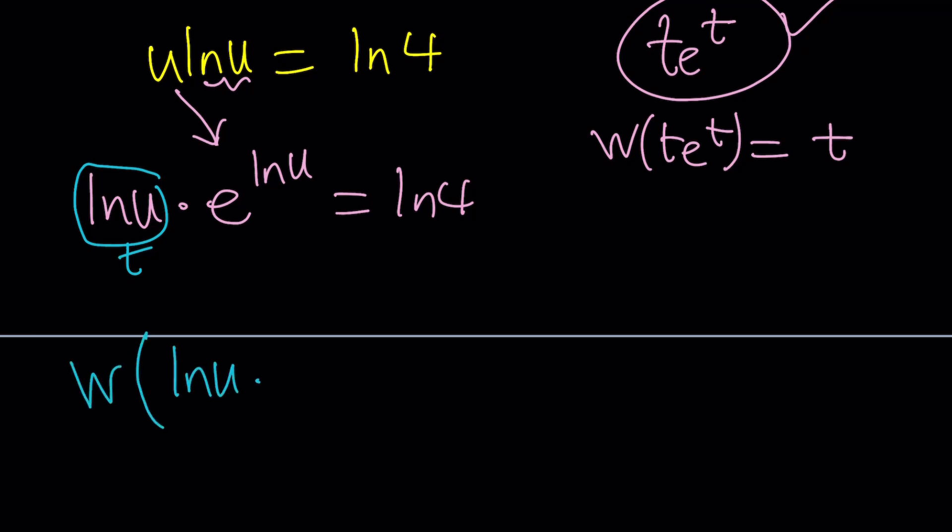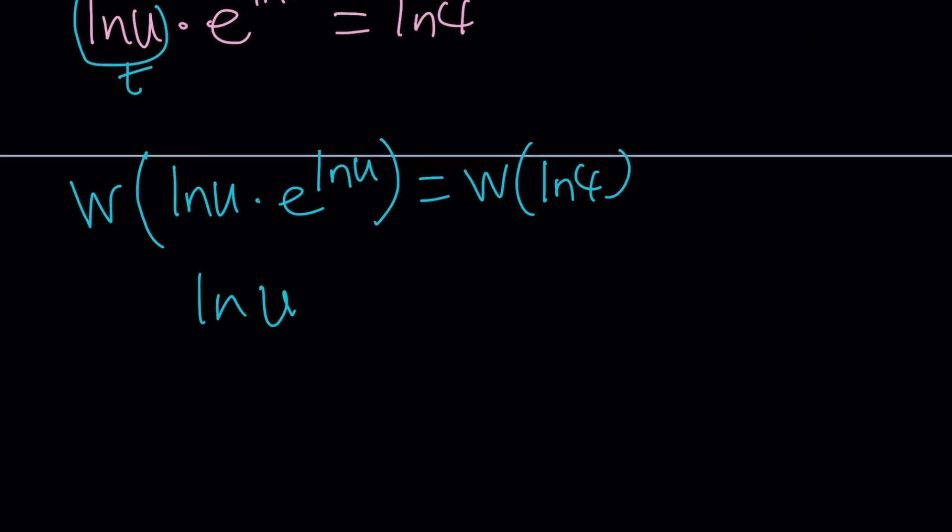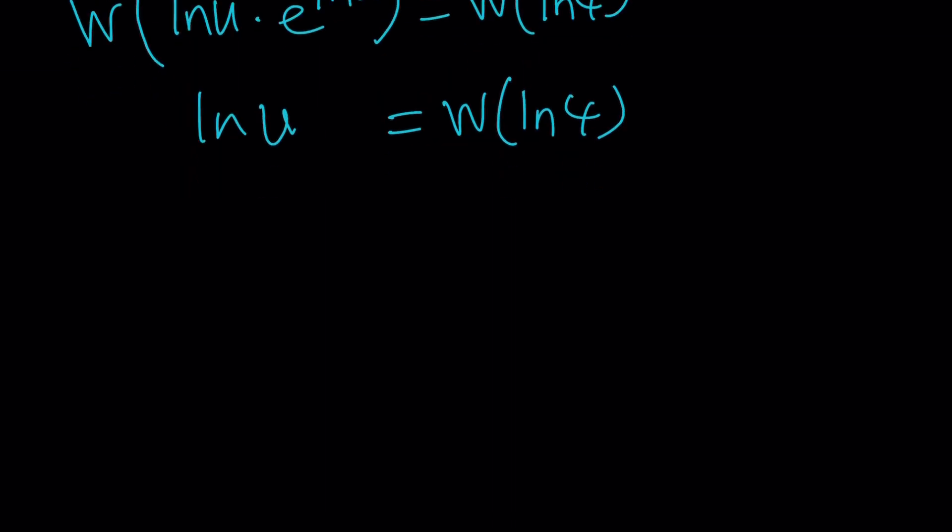What happens if I apply it on ln 4? Who knows right? That's the tricky part because you don't always have a simple answer. But at this point we can express u. How? We can express u as e to the power w ln 4. Because e to the power ln u is u. Right? So there we go. We kind of got an expression for u.